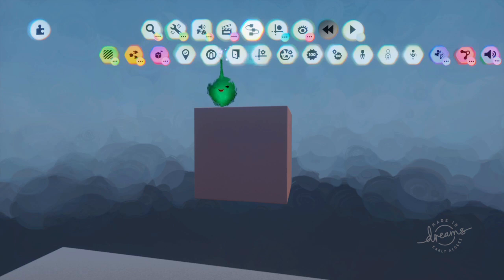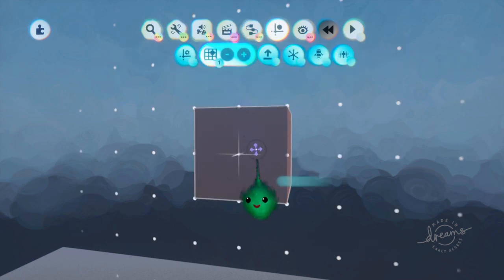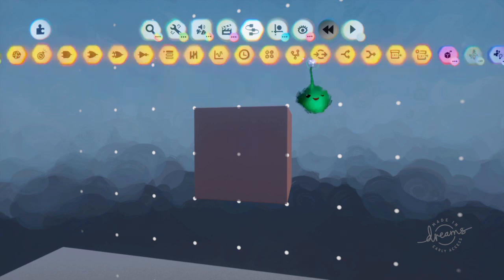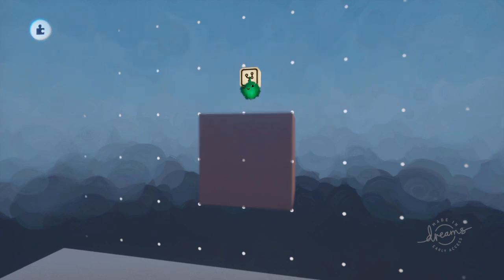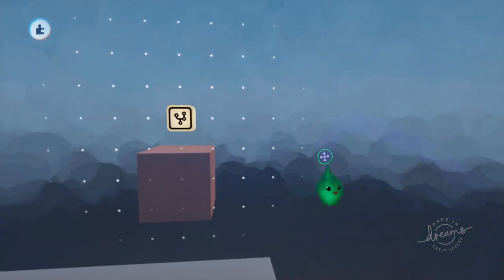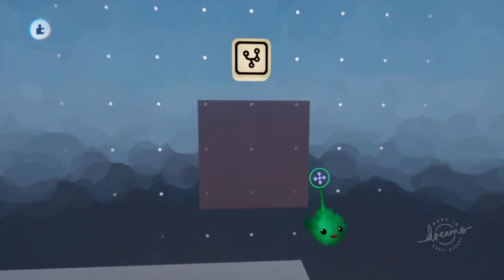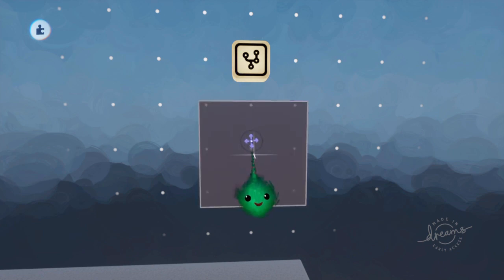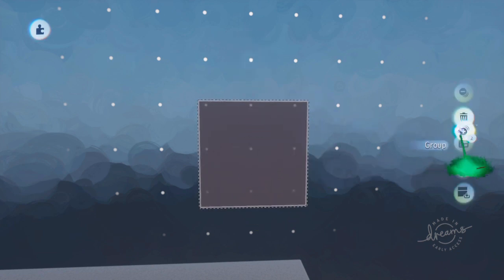Instead we can group it with something, and then it will use the current group. So if I go here, that's my favorite method of making a group that doesn't really do anything. Just stamp down an empty microchip, and then you can select these and group it.